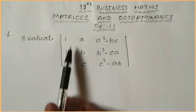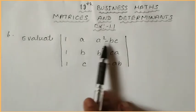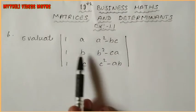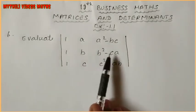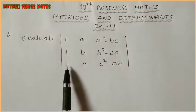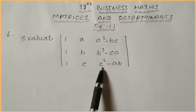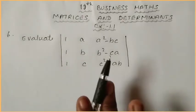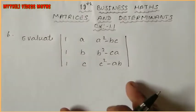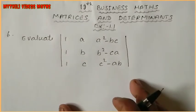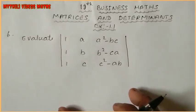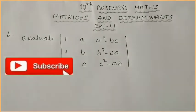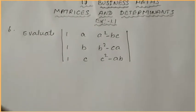That is: evaluate the determinant with entries (1, a², bc), (1, b², ca), (1, c², ab). So finally we have to show this equals 0. We have to check this value. Just let us try.